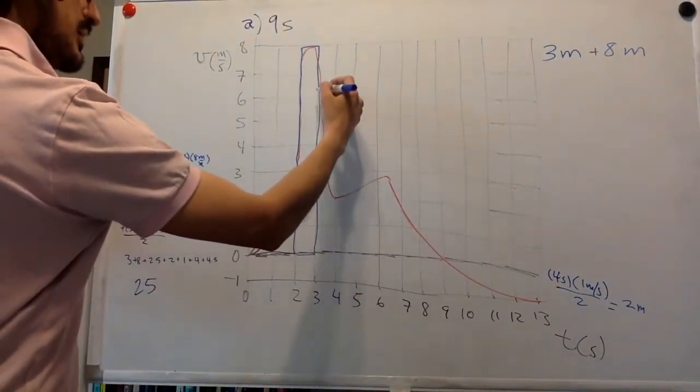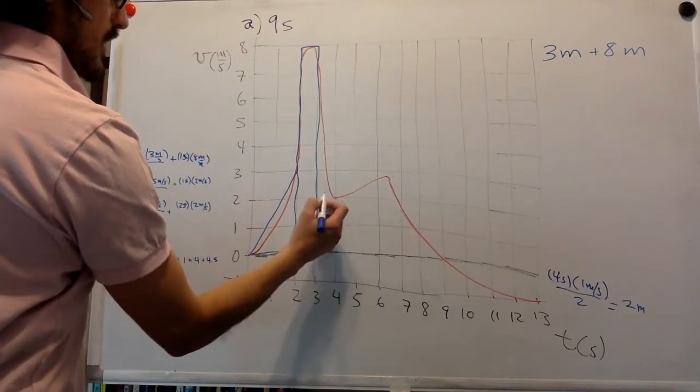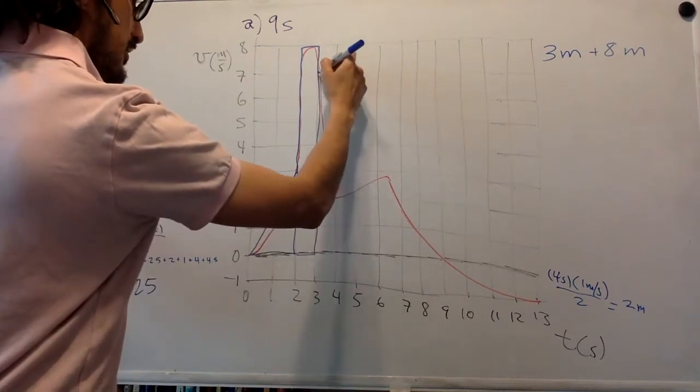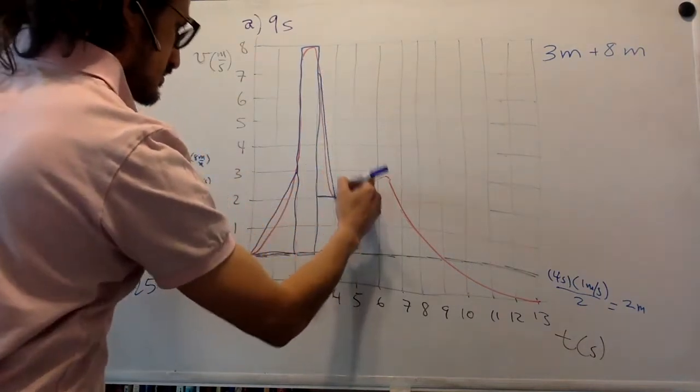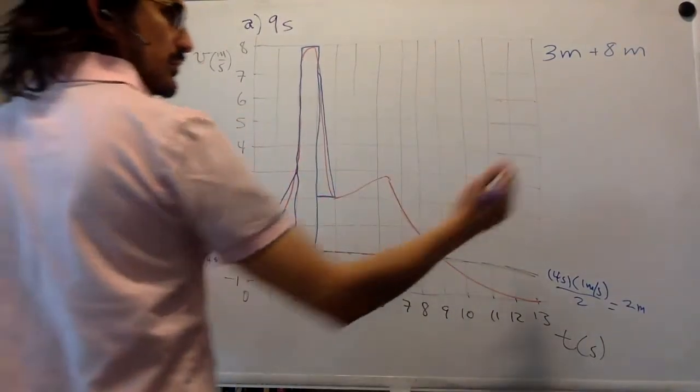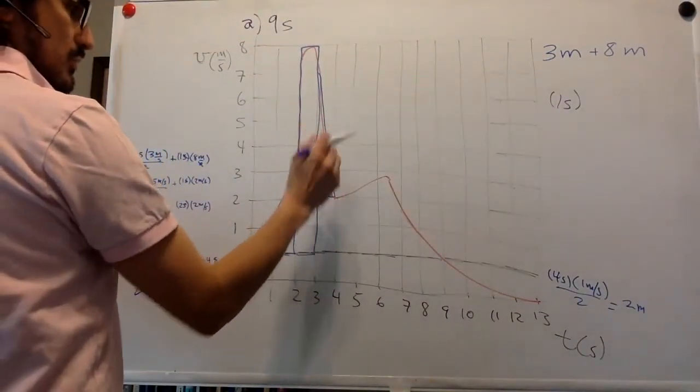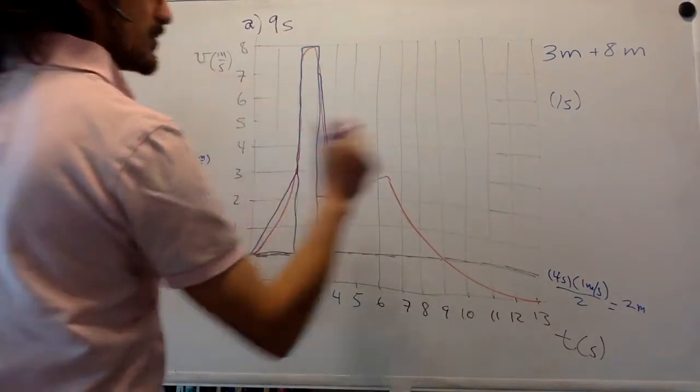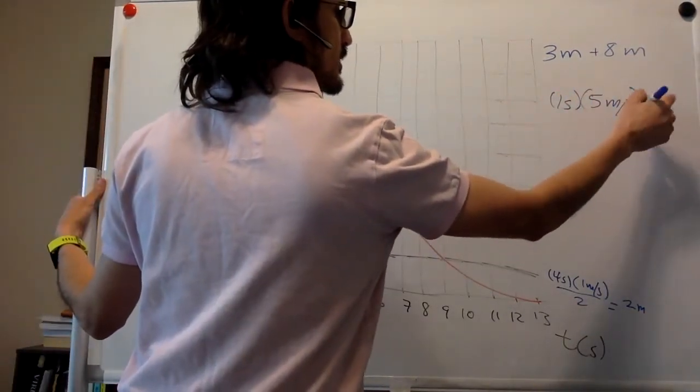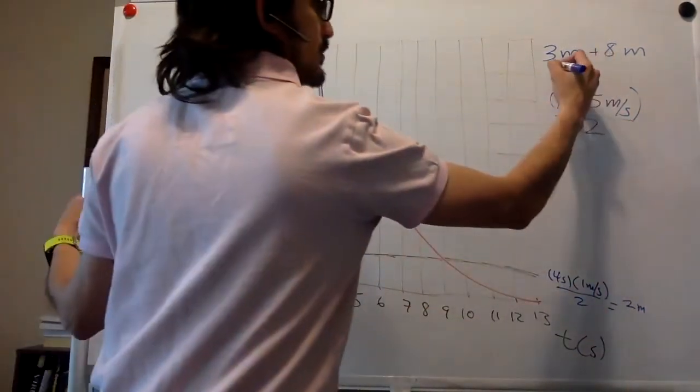And then here, I grab this triangle first. Right? So here, the width is one second. The height is one, two, well, from two to seven, about five meters per second. Divided by two because it's a triangle. So that's 2.5 meters.